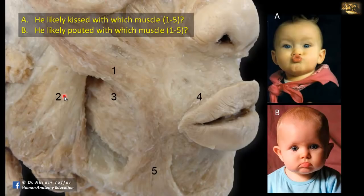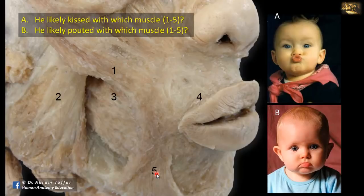The questions here are about the muscles used by these kids to kiss or to pout. Let's identify these muscles. Some of these muscles, like muscle 1, 4, 3, and 5, are muscles of facial expression. Only muscle 2 is the masseter, a muscle of mastication. These muscles of facial expression form a sphincter and a dilator mechanism around the mouth.